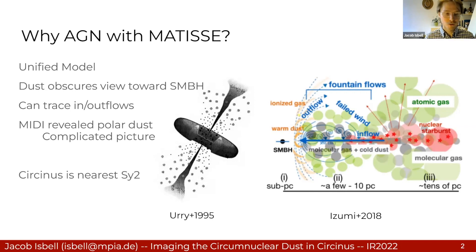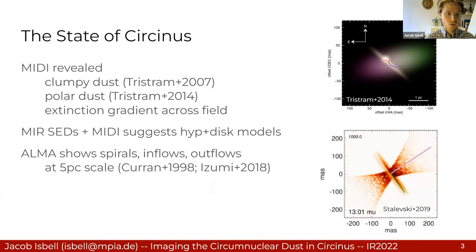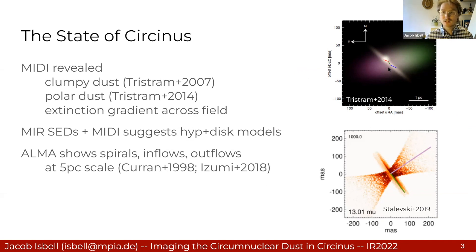I'll immediately turn my focus to Circinus, which is the closest Seyfert 2 to us. Circinus was studied extensively with MIDI. At first it was revealed that the dust should be clumpy because of correlated flux variations on small baseline changes, but then a later more detailed follow-up actually produced models. There's this disk, which is roughly aligned with the maser emission, but then perpendicular to this we have this large-scale, several-parsec polar dust.